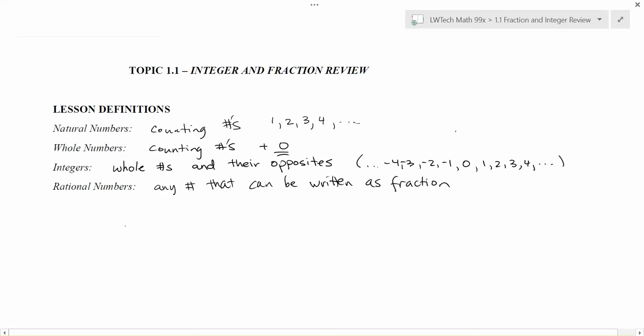So for example, we can include all of the integers, because any integer can be written by putting that fraction over one. So the integer of three could be written as three over one, negative three could be written as negative three over one. Of course, any fraction, one-third, five-sevenths, doesn't matter, and any negative fraction.